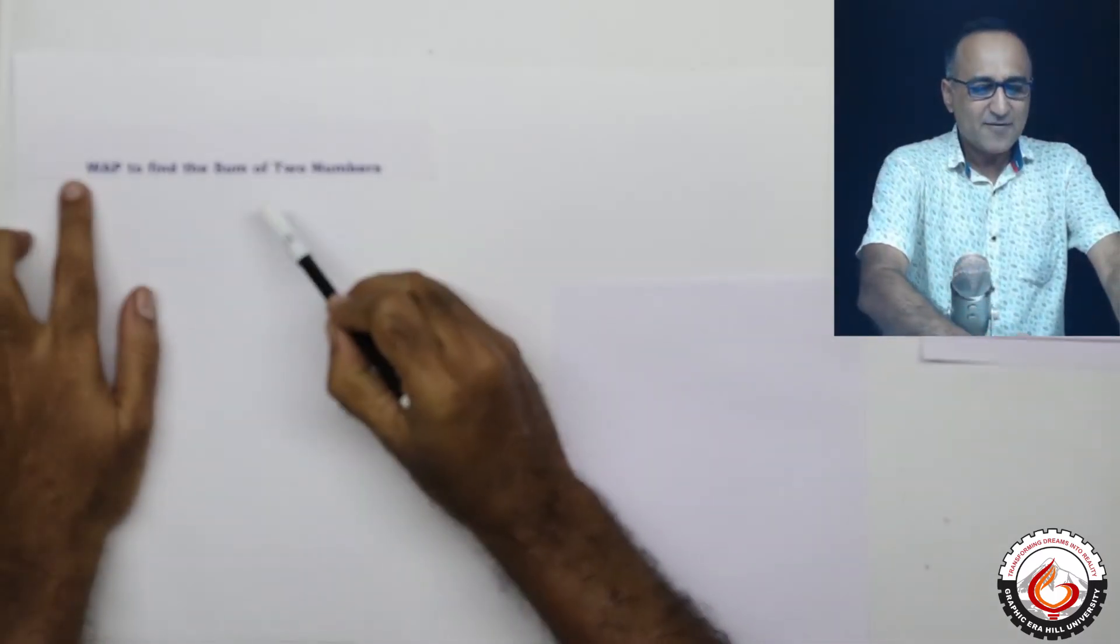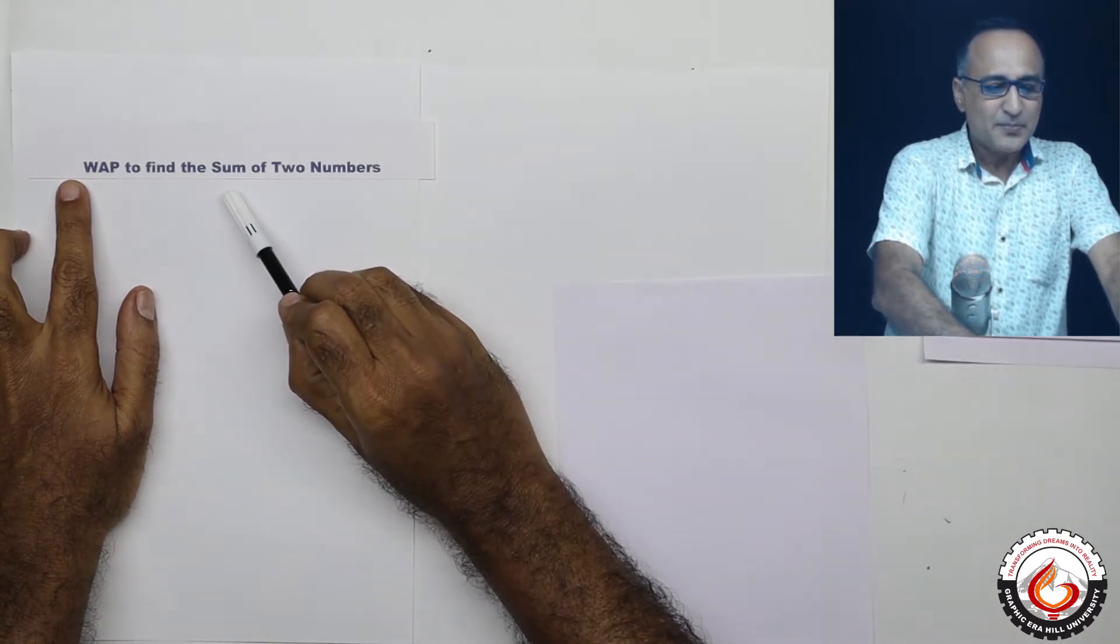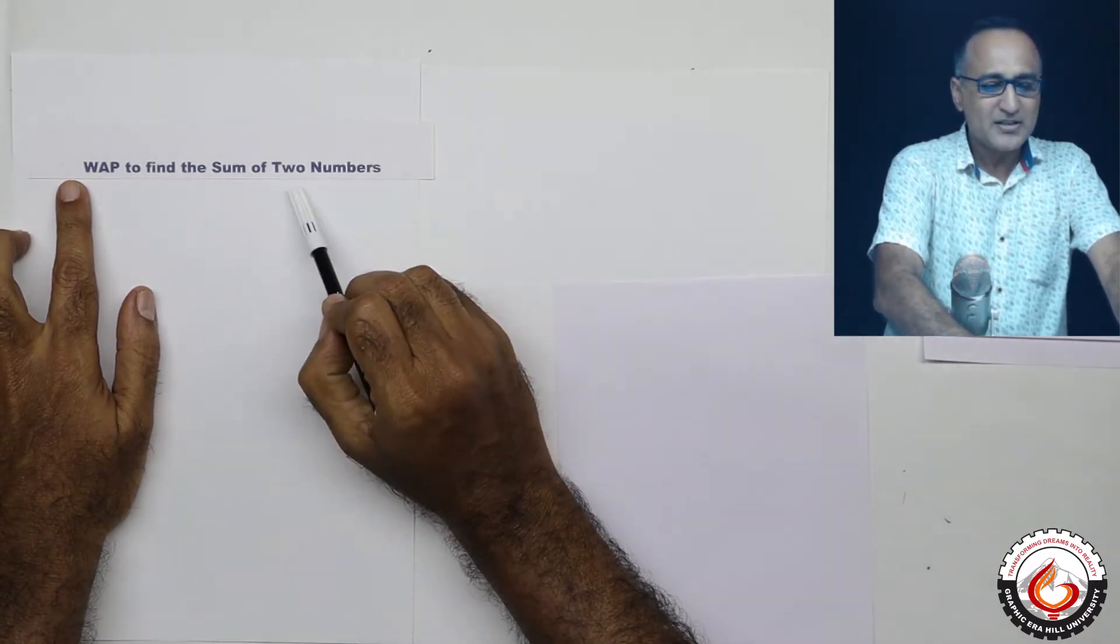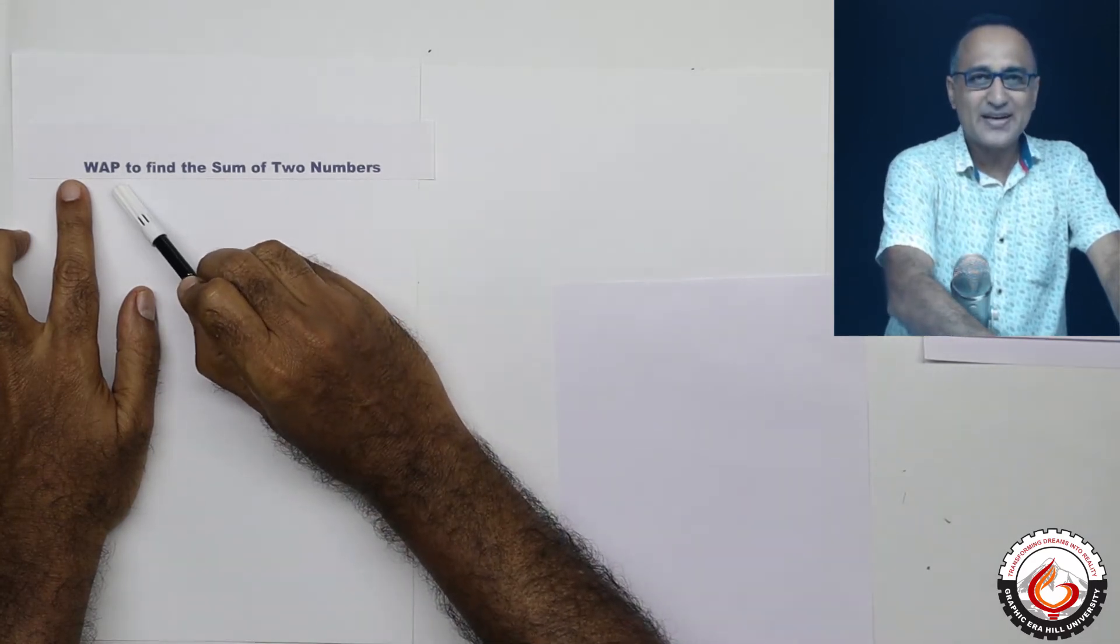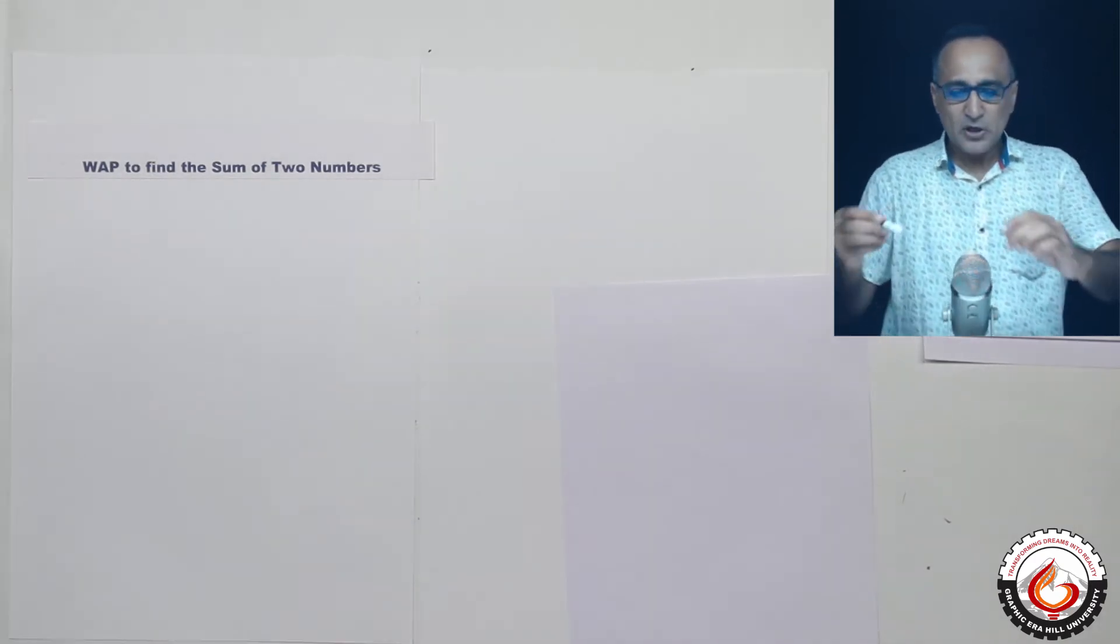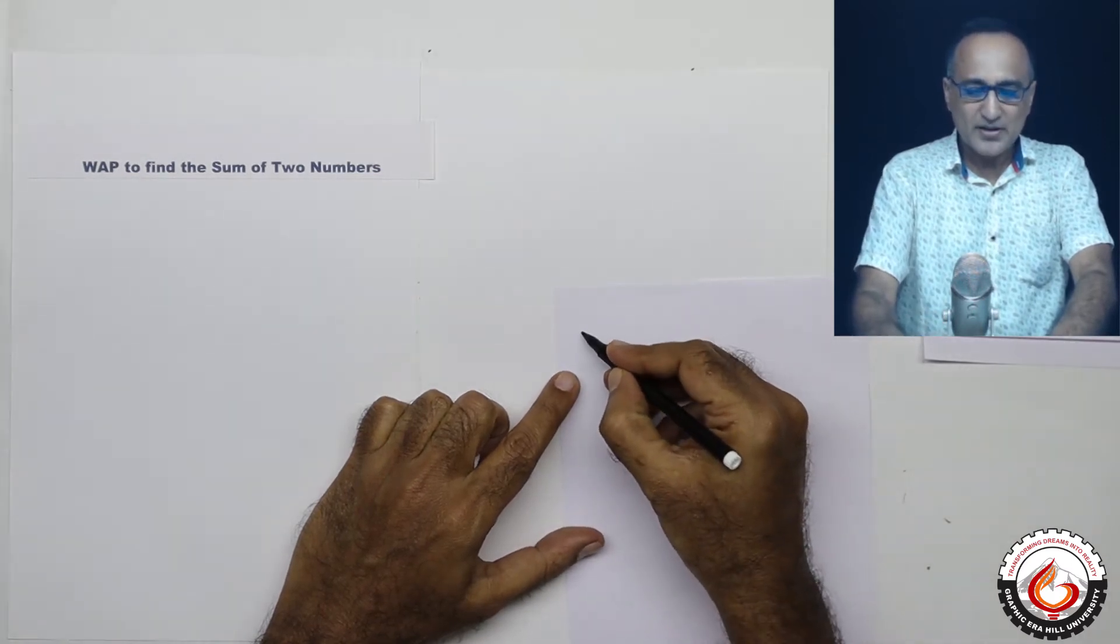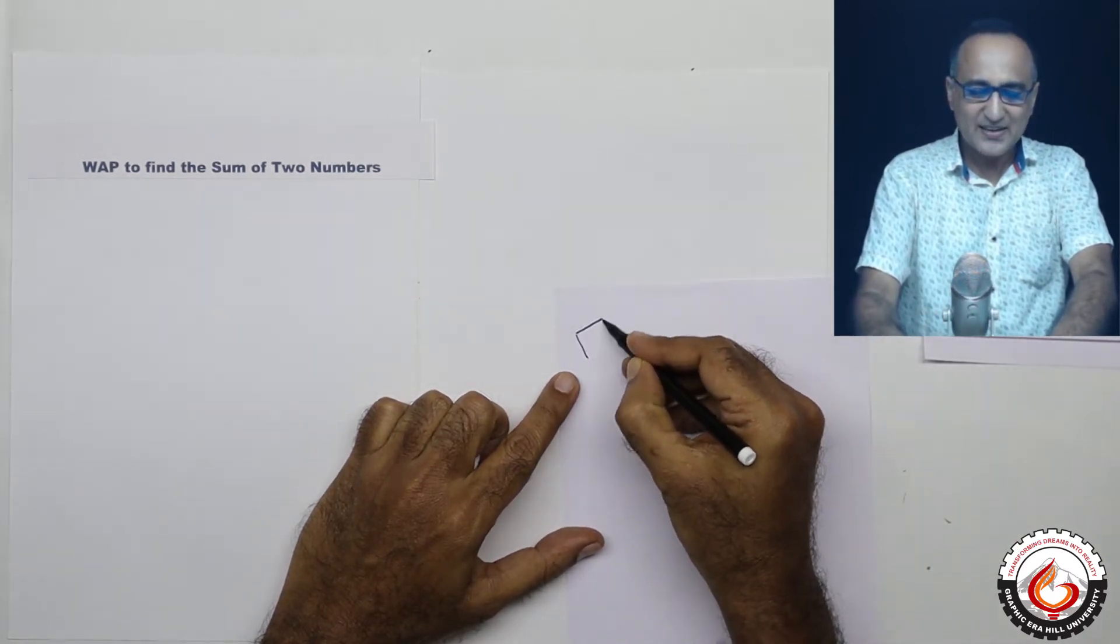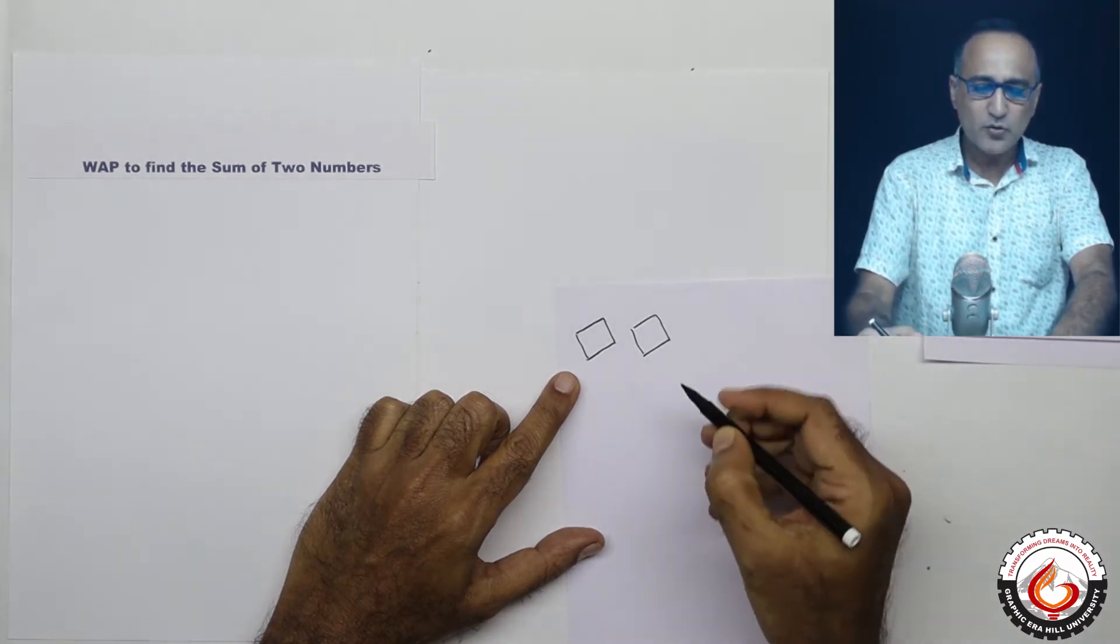So let's say our first problem is that we need to find the logic to find the sum of two numbers. WAP simply stands for write a pseudocode to find the sum of two numbers. Now if you have to find the sum of two numbers, the computer always requires you to first decide how many memory locations you would like to use.